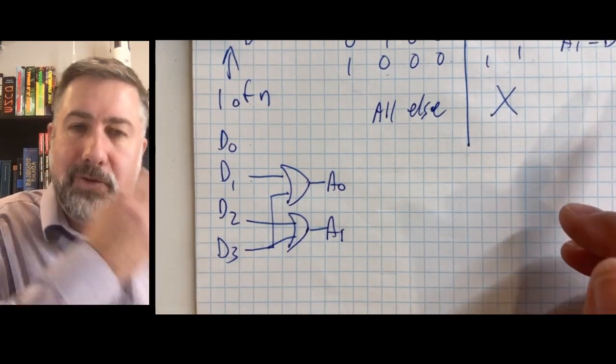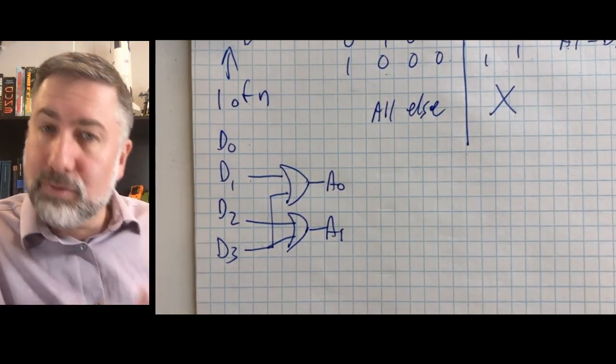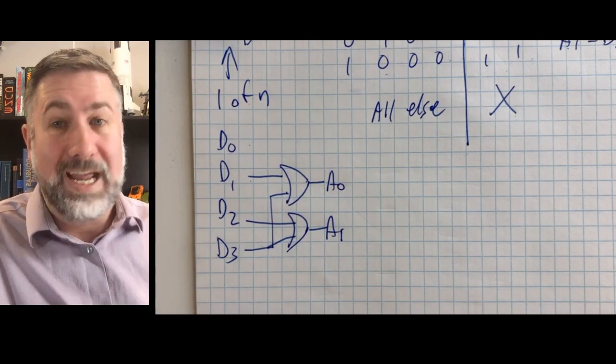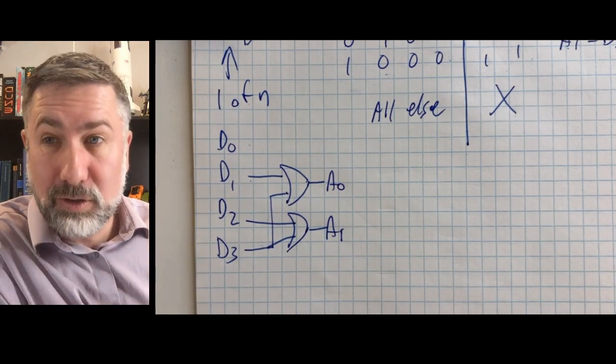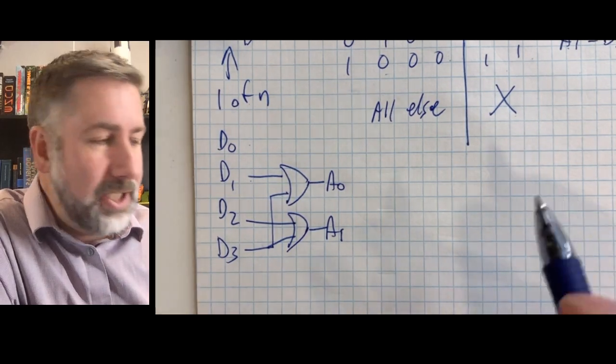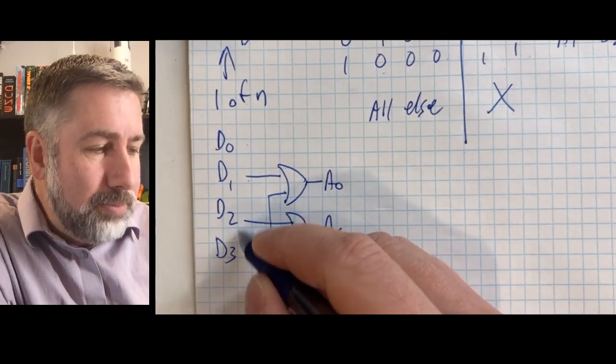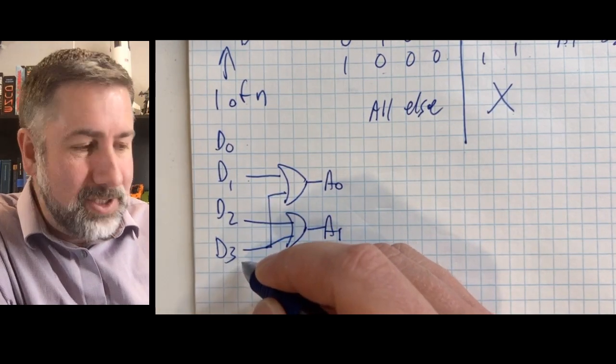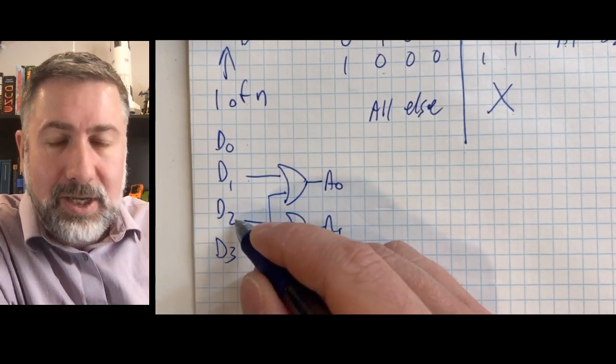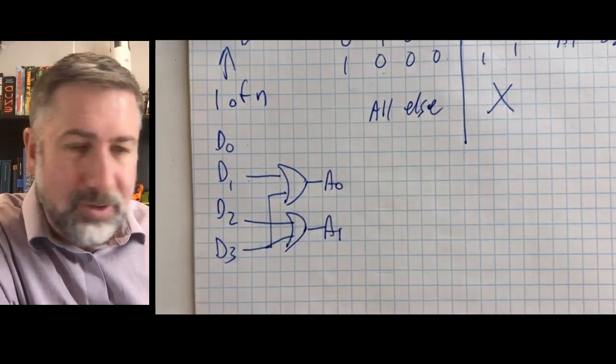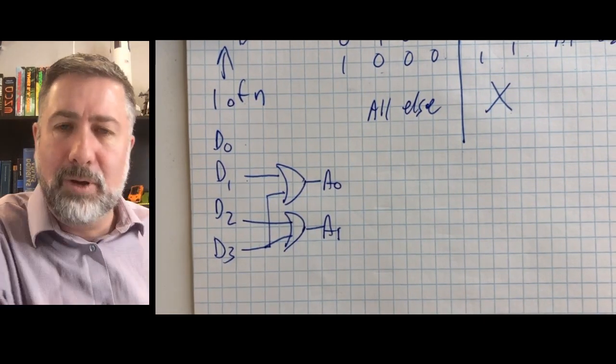Now I'll leave it as an exercise to generate an 8 to 3 encoder or a 16 to 4 encoder. There are other interesting things we can do with encoders like priority encoding, so that if two inputs happen at the same time, we can prioritize the higher priority one. I'm not going to build that right now. There are some notes about that in your notes.